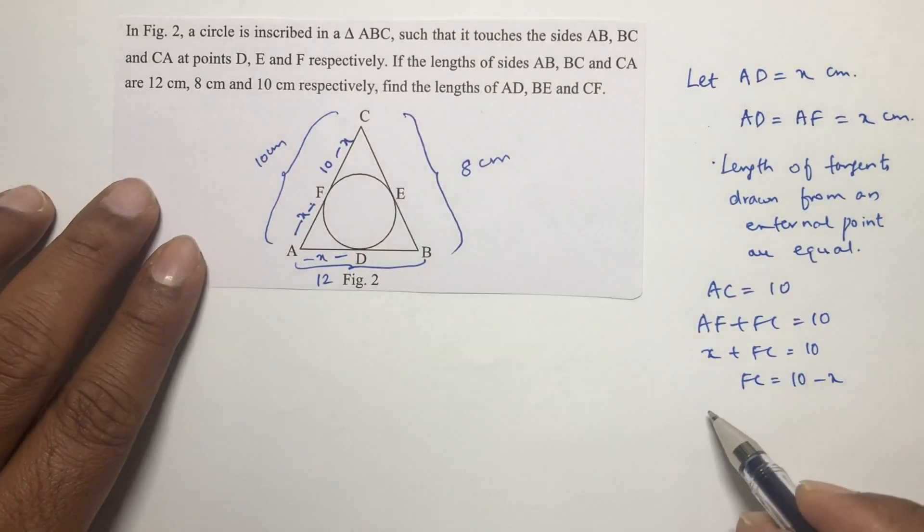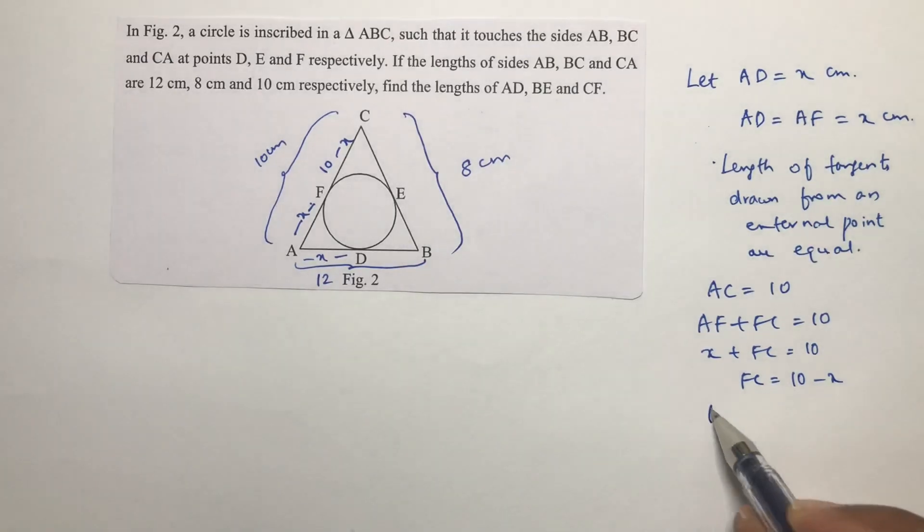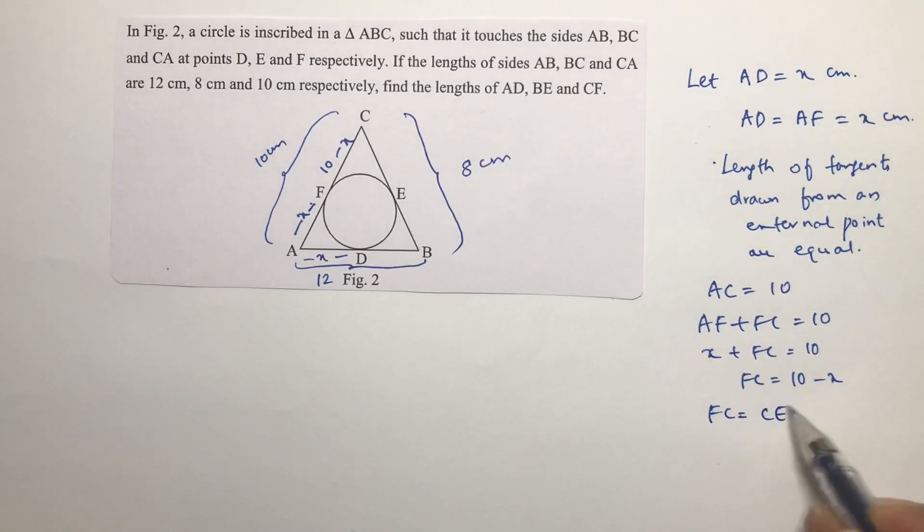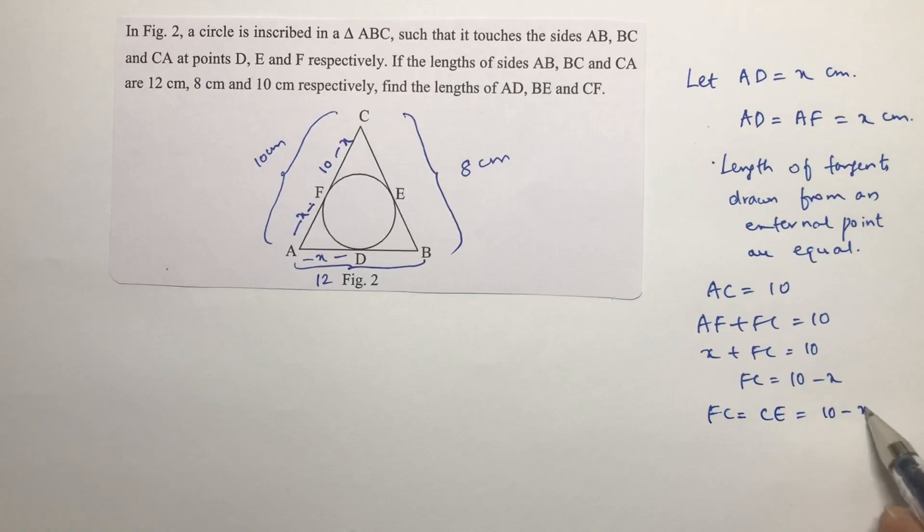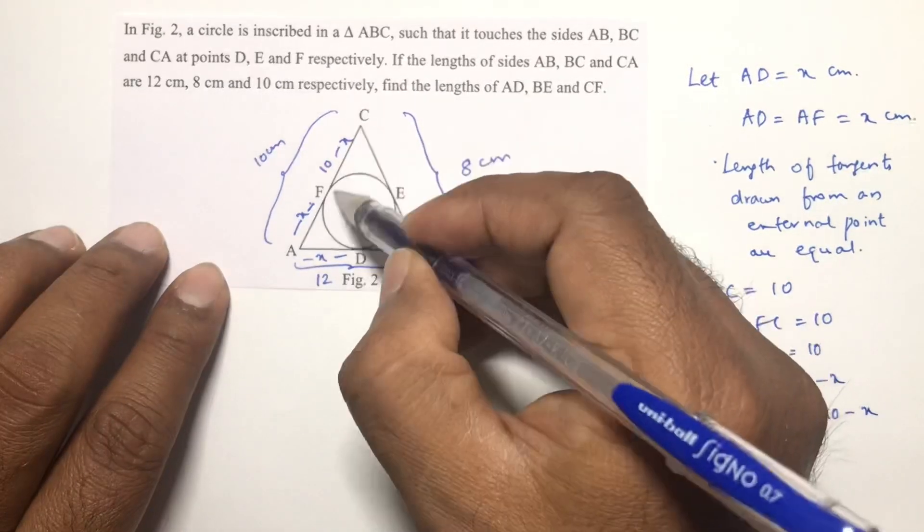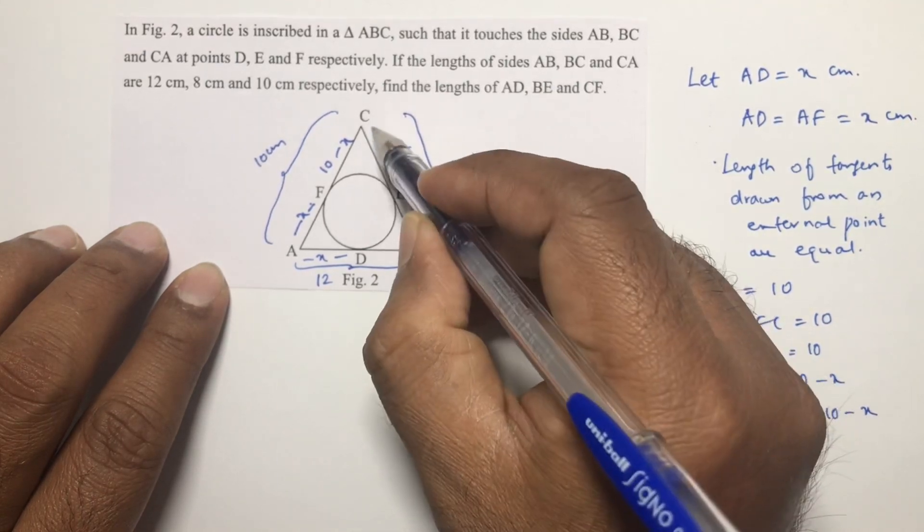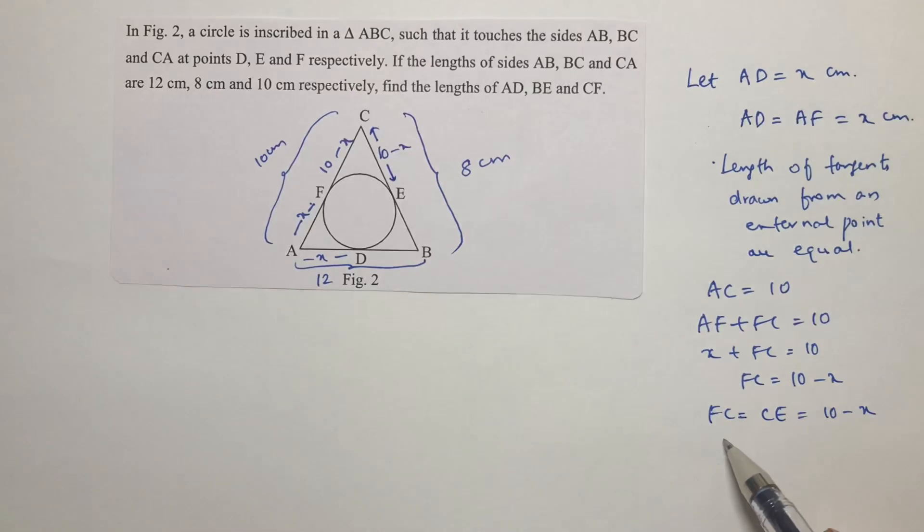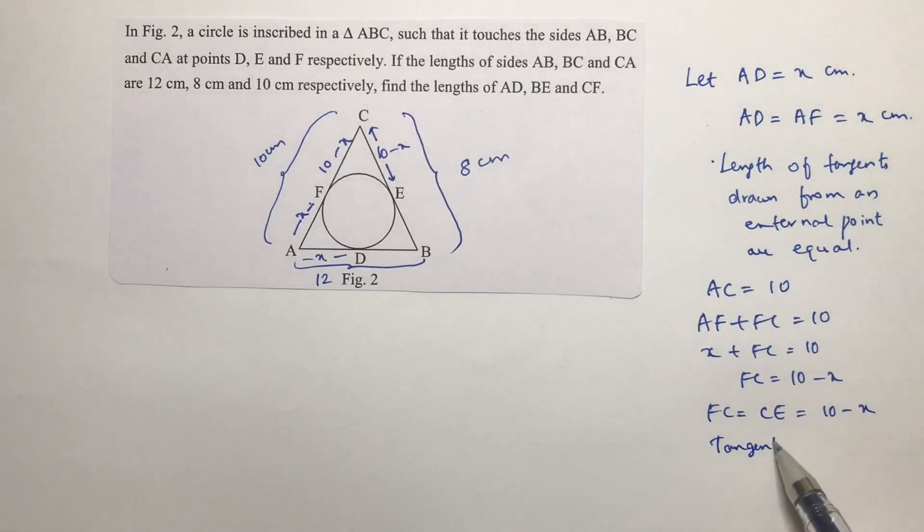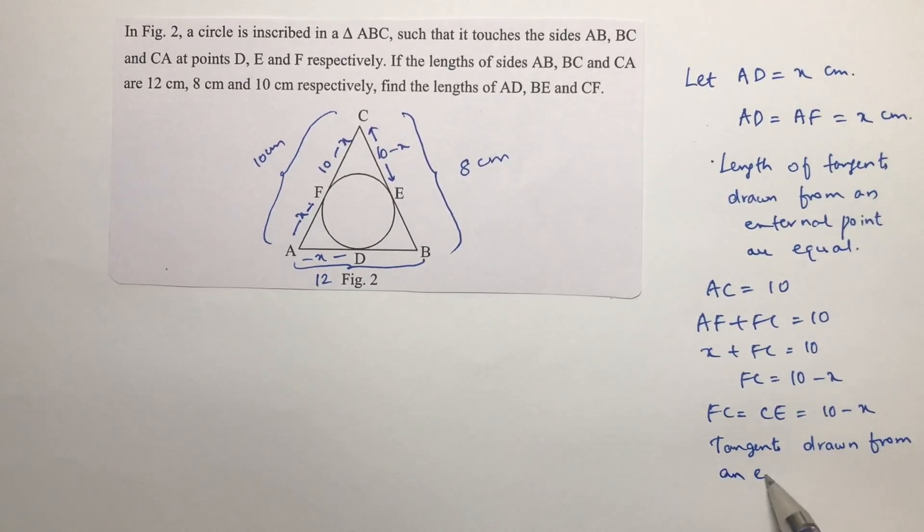If FC is 10 minus x, then CE also will be 10 minus x because these are the tangents drawn from an external point. Tangents drawn from an external point are equal.